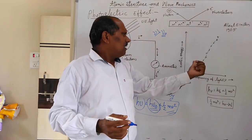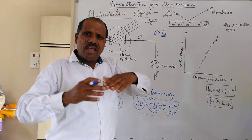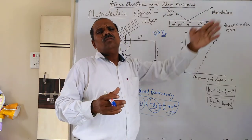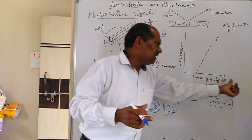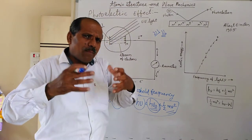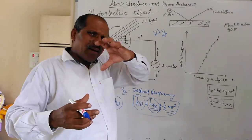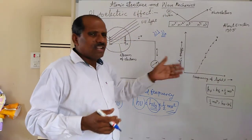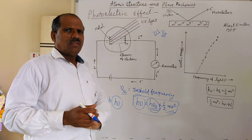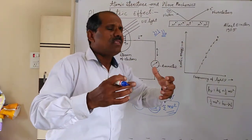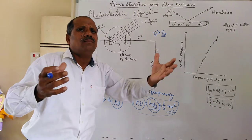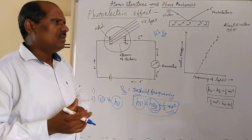Whenever a light photon with sufficient energy is incident on the metal surface, electrons are ejected with kinetic energy. If the frequency is more, then the kinetic energy associated with the ejected electron will be more. When plotting a graph between the frequency of incident light photons (nu) and the kinetic energy of the photoelectrons, a straight-line graph is obtained. The frequency must be greater than the threshold frequency.